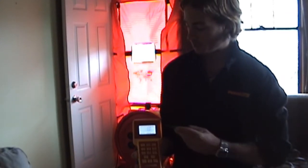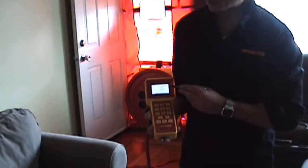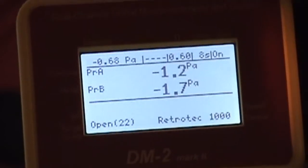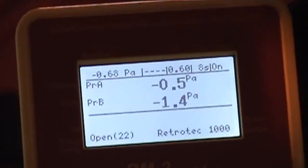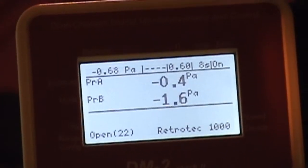So now that they're all on you can see on PRA on the gauge we're running at about negative 1.5. It's fluctuating. That means the exhaust system in this house is not overly powerful. So we're not at any risk of backdrafting fumes into the house.